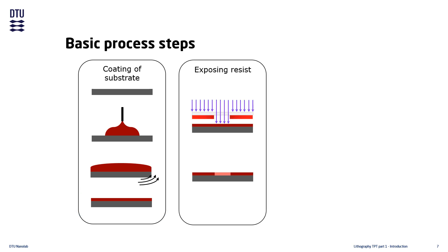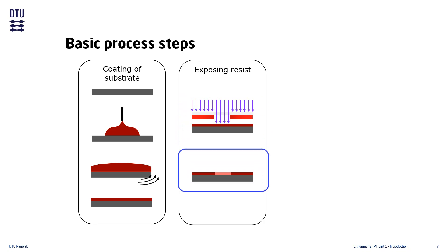The next step is exposing the photosensitive resist in order to transfer a desired pattern into the resist. In this step the resist is exposed to the appropriate radiation — for example, if the resist is sensitive to deep UV light, it must be exposed by a tool capable of emitting deep UV light. The exposure radiation is partially blocked by a photomask or other mechanisms, which leaves a chemically altered pattern in the resist on the substrate.